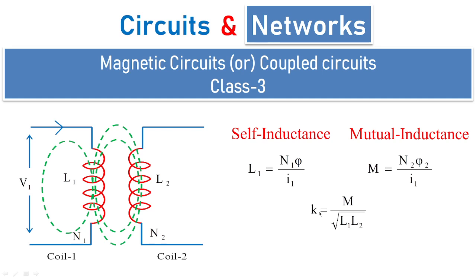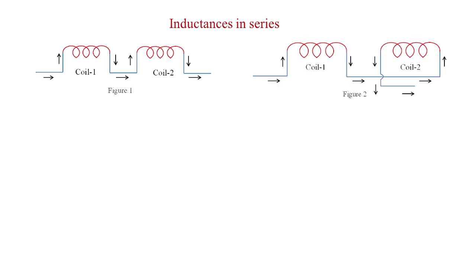We are going to see basic numericals based upon these formulas. We also know that when inductors are connected in series — shown in figures 1 and 2 — the cumulative arrangement gives equivalent inductance L = L1 + L2 + 2M, whereas the differential arrangement gives L = L1 + L2 − 2M.